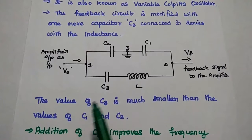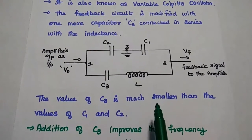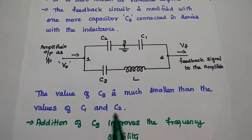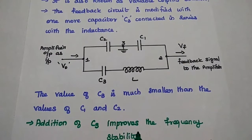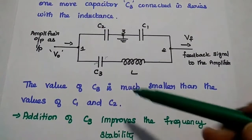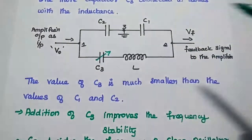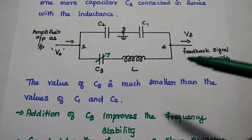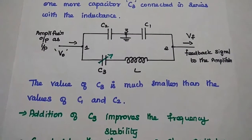The value of the third capacitance C3 is much smaller than the values of C1 and C2. The addition of C3 improves the frequency stability of the oscillator. If we make the C3 capacitor a variable one, then we can get oscillation over a variable frequency range.